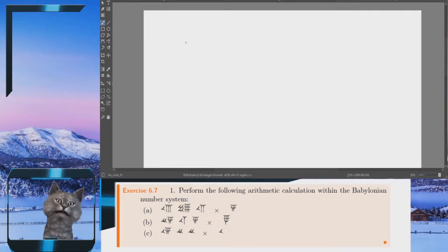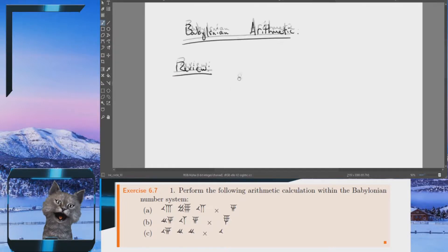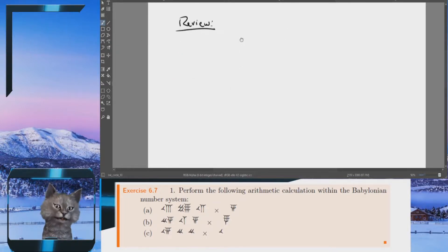All right, welcome to this session on Babylonian arithmetic, where we've done some addition and subtraction, and next and last, we have to do some multiplication. But first, let's just review the decimal system and the method for multiplication, because the method is not going to change.